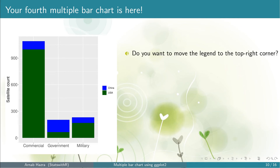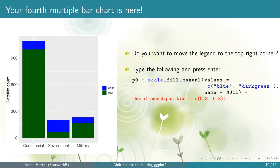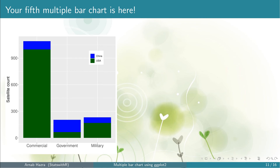Next you might want to move the legend from outside to the top right corner of the plot. To do that, within theme add the line legend.position = c(0.8, 0.8). Here these two numbers can be anything between zero and one. The larger the first argument, the legend will move towards the right; and the larger the second argument, the legend will move towards the top. So you need to choose two numbers so that the legend does not cover your bars. Now press Enter and you get your fifth multiple bar chart — the legend is inside the figure now.